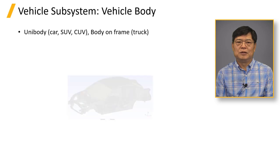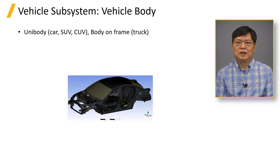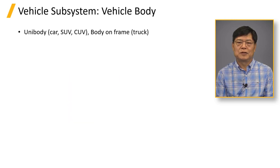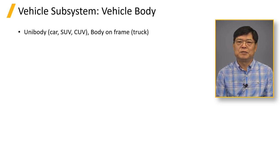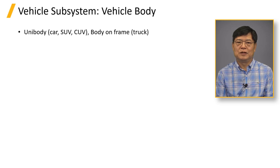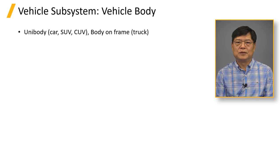The vehicle body in a vehicle dynamics model has two layouts: the unibody structure for cars, SUVs, and CUVs, and the body-on-frame structure for trucks. As electric vehicles become popular, EV trucks also use unibody structures. The rigid body representation of the vehicle body is mass, CG, and moment of inertia. CG height and moment of inertia can be obtained from historical data. Electric vehicles with a battery installed in the floor have substantially lower CG height, which would not be correlated to traditional ICE vehicles.